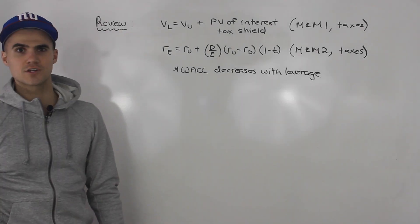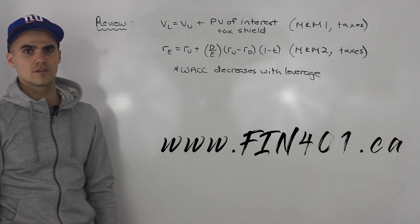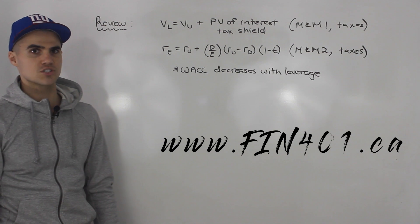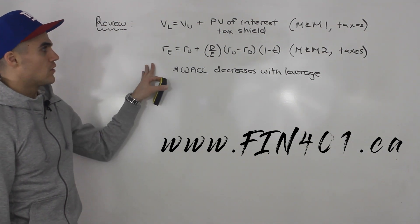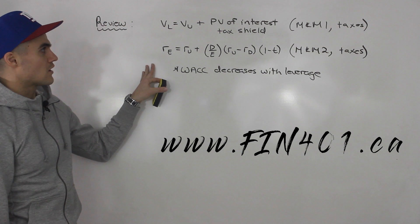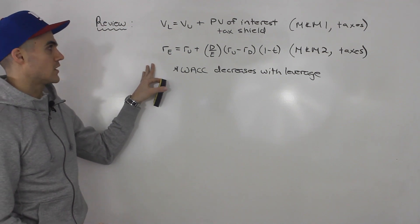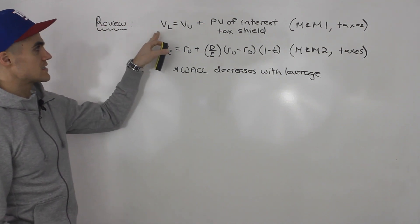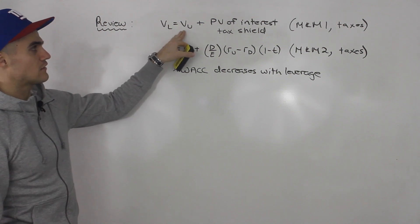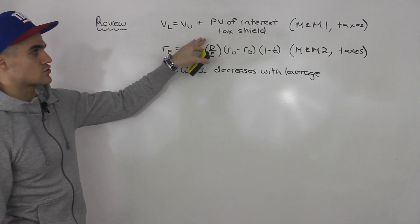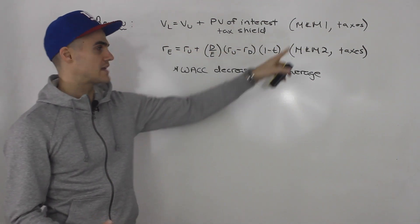Welcome back. Patrick here, moving on with the video series for the M&M propositions with taxes. Let's do a quick review of what we've covered so far. Number one, we said that the value of a levered firm is the value of an unlevered firm plus the present value of the interest tax shield. That's M&M proposition one with taxes.